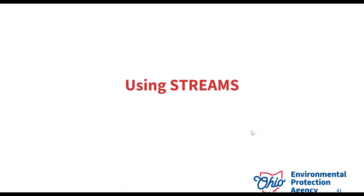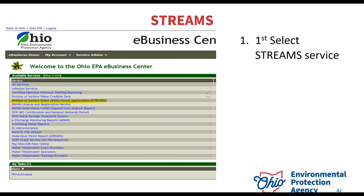So using streams. The stream service is another service available within the list on the eBusiness Center — it's currently the longest link in our system. This is where you're going to click to submit for a new permit, renew a permit, modify a permit, create reports with your permit, transfer your permit if you sold your business, or terminate through here as well.